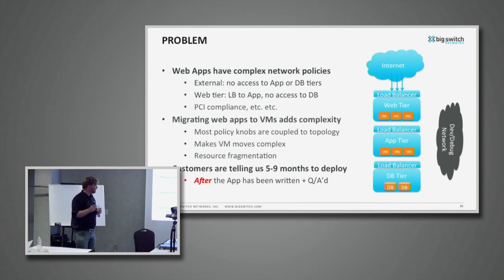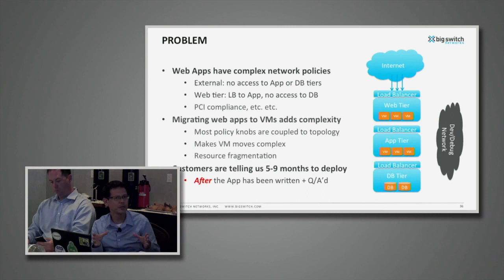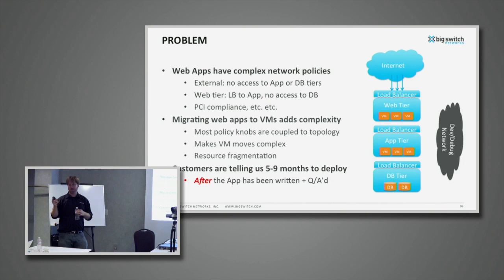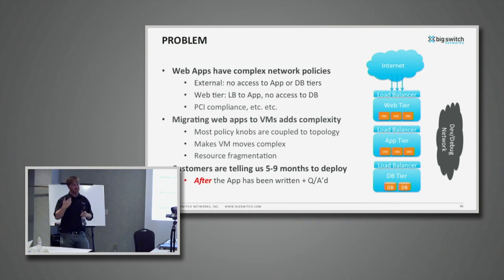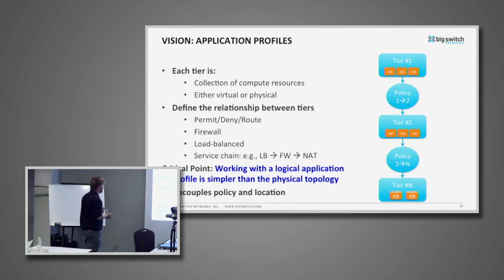The quote I've heard from a couple of customers is that after an application has been written, tested, and QA'd, it takes five to nine months to deploy in the network — just for the network configuration: finding outage windows, setting all the configs right, talking to the right people and teams. There's also the compliance issue of keeping it within a particular environment. It actually gets worse with VMs because VMs can move around. A lot of policy tuning knobs in the industry are physically coupled — if you want a firewall to block traffic between A and B, you have to put it on the wire between A and B.